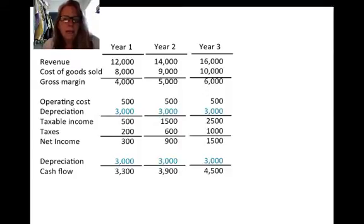This is probably because sales are increasing over time. Operating costs remain flat, and then I've laid in depreciation to get to taxable income. Then I took taxes, which is 40% of that value, to get to net income.